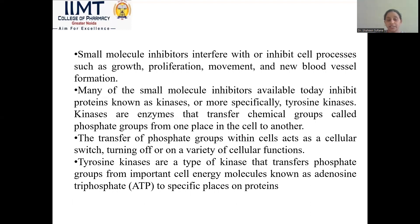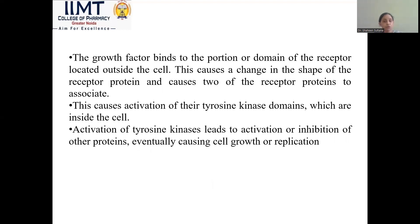Small molecule inhibitors inhibit cell processes such as growth, proliferation, movement, and new blood vessel formation. Many inhibit proteins such as kinases, or more specifically, tyrosine kinase. Kinases are enzymes that transfer chemical groups called phosphate groups from one place in the cell to another. This transfer acts as a cellular switch, turning off or on a variety of cell functions. Tyrosine kinase transfers the phosphate group from ATP — adenosine triphosphate — to specific places on proteins.